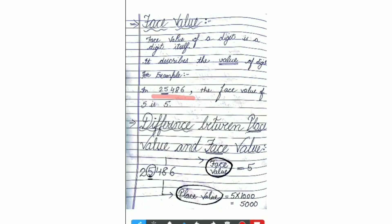Taking the same example — this is the number, and I want to know the face value of 5. Can the value of 5 be 4? Can the value of 5 be 2 or 3? No. The value of 5 will be 5 only. So, the face value will be 5 only. Face value of a digit is the digit itself. If asked for the face value of 6 — it is 6 only. 8's face value is 8 only. 4's face value is 4 only. Regarding any number, the same number will be its face value.